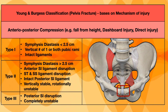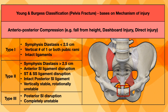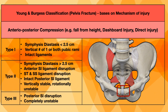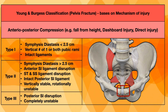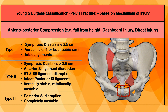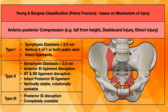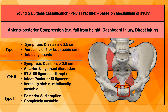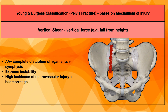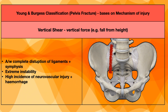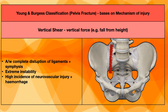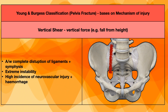In anteroposterior compression type 3, the posterior spinal sacroiliac ligament will also be disrupted. Now, if the posterior sacroiliac ligaments are disrupted, the pelvis will become completely unstable. All the ligaments are broken, so the pelvis will become completely unstable.